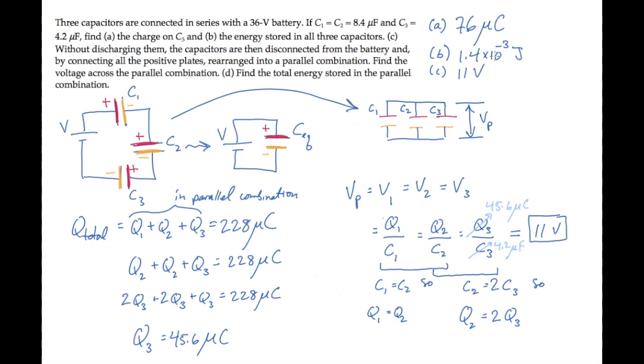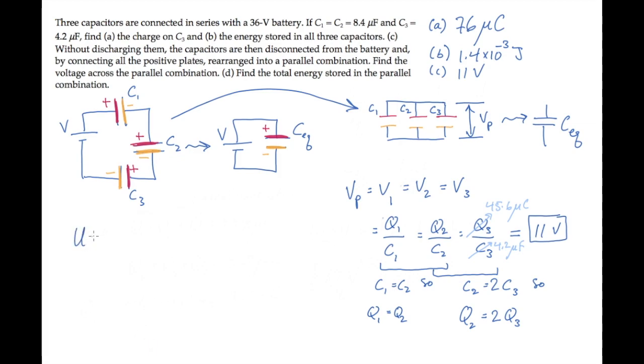The last thing we're asked to find is the total energy stored in this new parallel combination. And as before, I'll do that by finding the energy stored in the equivalent circuit. The three capacitors in parallel can be replaced by one equivalent capacitance, and the energy stored in that equivalent capacitor is one-half the equivalent capacitance times the voltage across it squared. For a parallel combination, the equivalent capacitance is the sum, so we add those three capacitances, multiply by the 11 volts squared, to find that the energy in this parallel combination is lower than it used to be, that's 1.3 times 10 to the minus 3 joules.